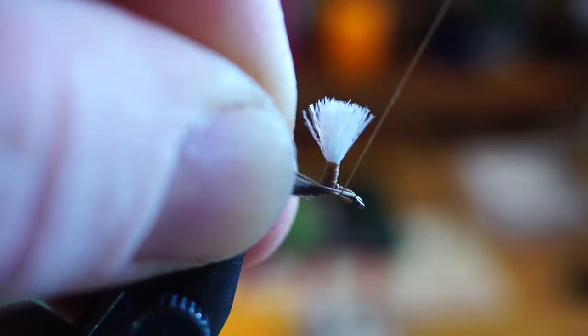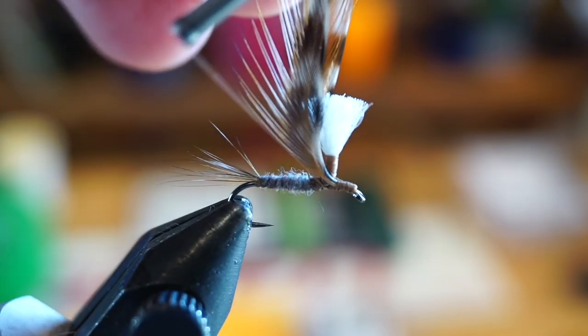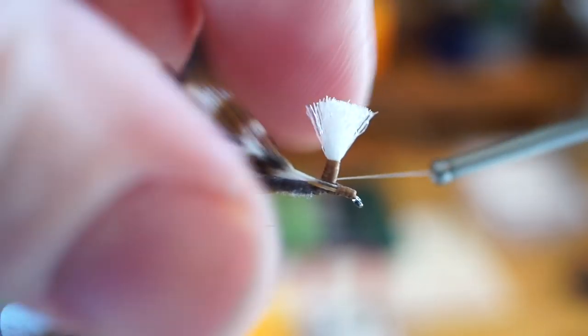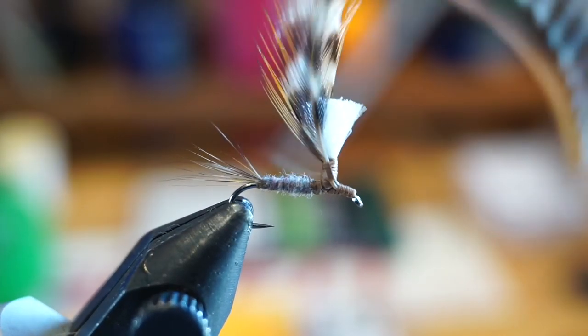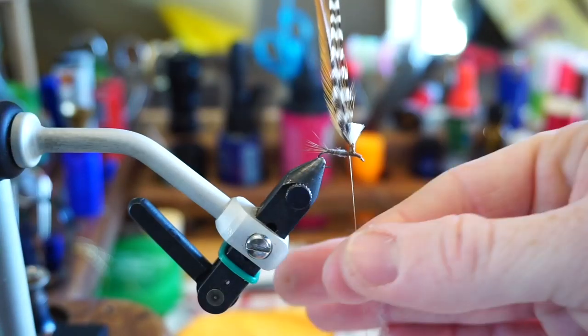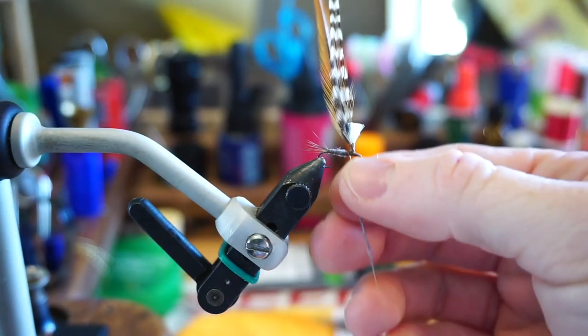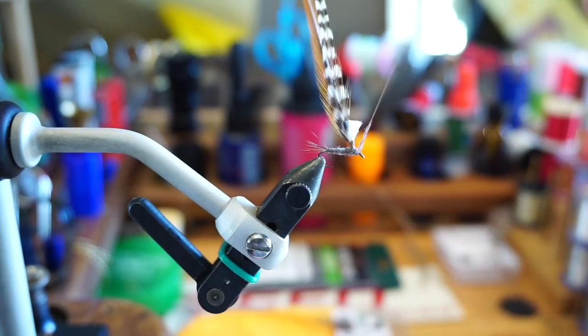Now tie the hackles in on the side of the fly facing you. And then go under the hackle with your thread and pull the hackles upward as you tie up the post. Then bring your thread back down the post and onto the hook shank. Now dub on a little more of your dubbing and make alternating wraps in front of the post and behind it, building up a small thorax.